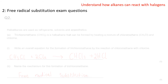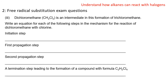On to the next part of the question, which involves dichloromethane. CH₂Cl₂ is an intermediate in this formation of trichloromethane. Write an equation for each of the following steps in the mechanism for the reaction of dichloromethane with chlorine. The first part is the initiation step — and as you should remember, the initiation step always starts with the halogen. So write Cl₂ with an arrow, and over the top of that you could put UV to show that UV light is breaking this up, giving us two chlorine radicals. Do not forget that dot.